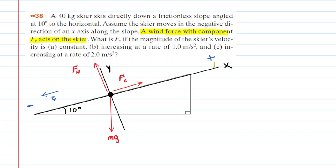It may turn out as we solve this question that this assumption is improper. If we end up calculating a positive value for f sub x, then our assumption that it's pointing up the positive x-axis will be correct. But if we calculate a negative value for f sub x, then our assumption was incorrect and we should point it the other way. Keep that in mind as we solve for f sub x.